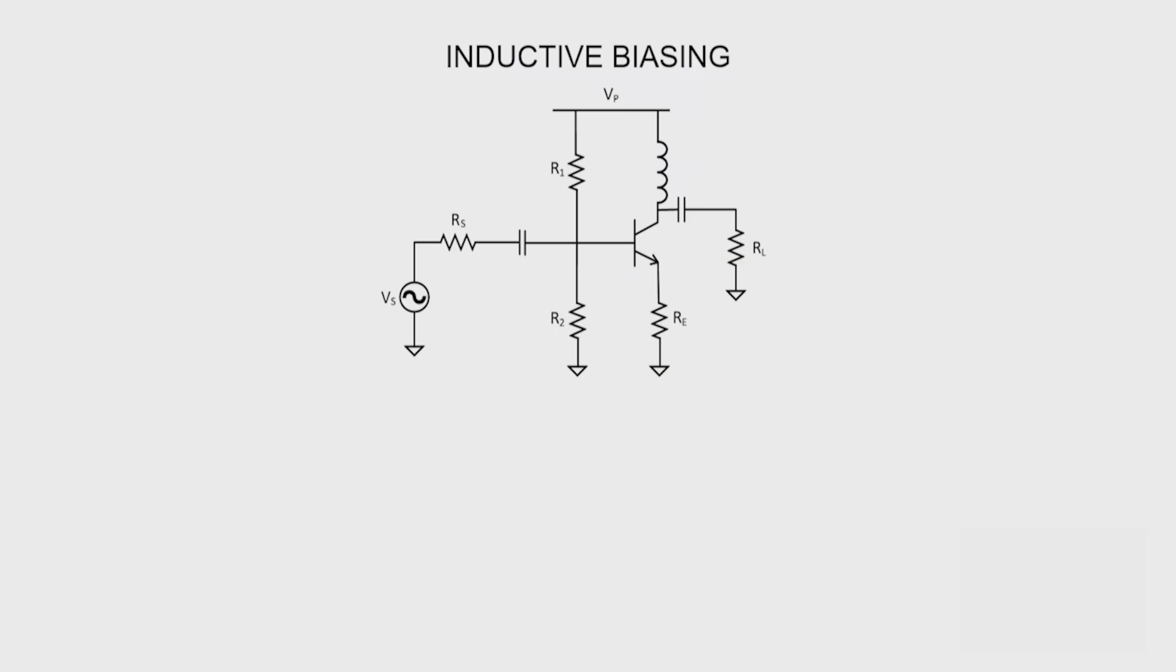When we want to get a bipolar transistor biased in the forward active region, or we want to get a MOSFET biased in the saturation region, we often use resistors and capacitors to design our amplifiers. We use resistors to establish the right voltages at the base collector and emitter, or at the gate source and drain. But did you know that we can also use inductors instead? Look at this example. An inductor's been used to connect the power supply to the collector. In this video, we're going to see why this might be advantageous sometimes.